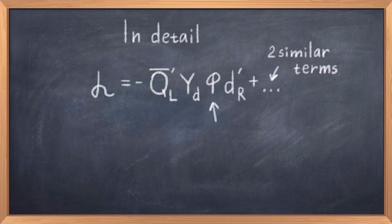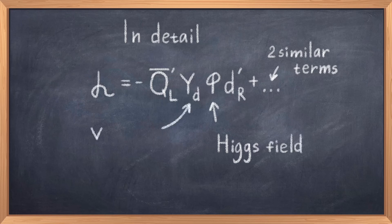There is a term just like this for the up type quarks, thus the up, charm and top quark, and then there is another term for the leptons. These three terms are all similar, so looking at one of the terms is enough to understand the concept.